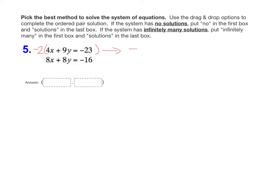Negative two times four x makes negative eight x. Negative two times nine y is negative eighteen y. And negative two times negative twenty-three is positive forty-six. Feel free to use a calculator if you need to.